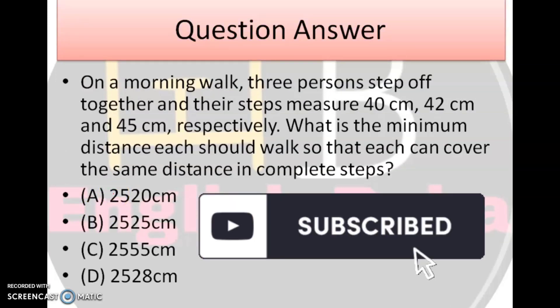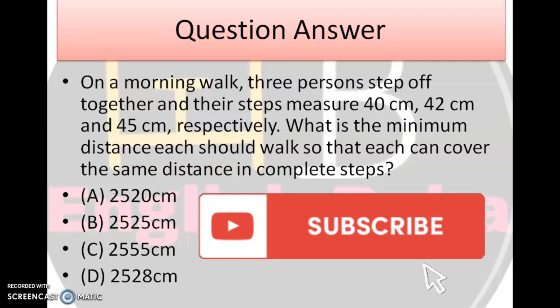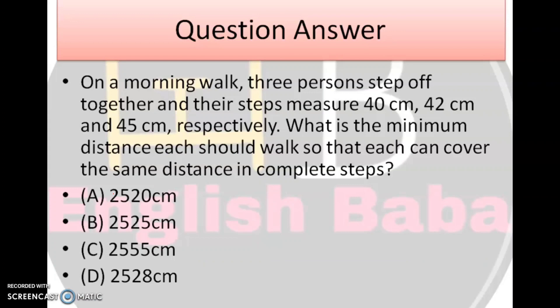Next question. On a morning walk, three persons step off together, and their steps measure 40 cm, 42 cm, and 45 cm respectively. What is the minimum distance each should walk so that each can cover the same distance in complete steps. Jab bhi aapko yeh word dikhega, minimum, yeh hai aapka minimum, minimum ka matlab hai, hamen LCM nikalna hai. Ab hum teeno ka LCM nikalenge, aur aap ka answer aayega, 2520 cm.